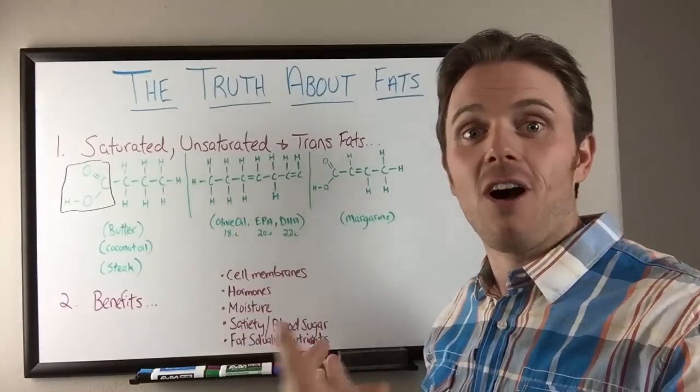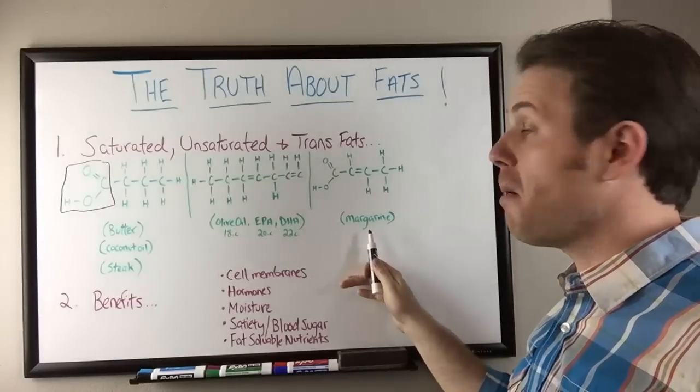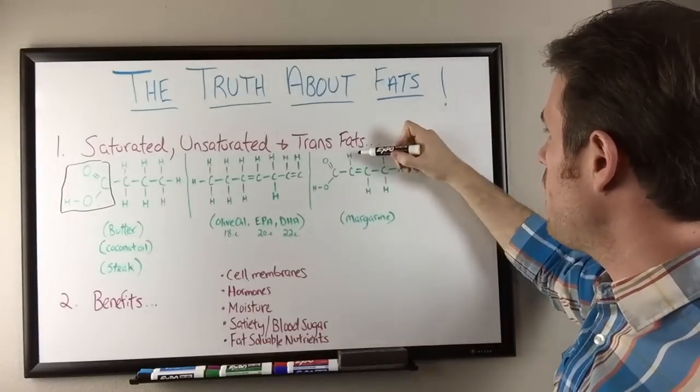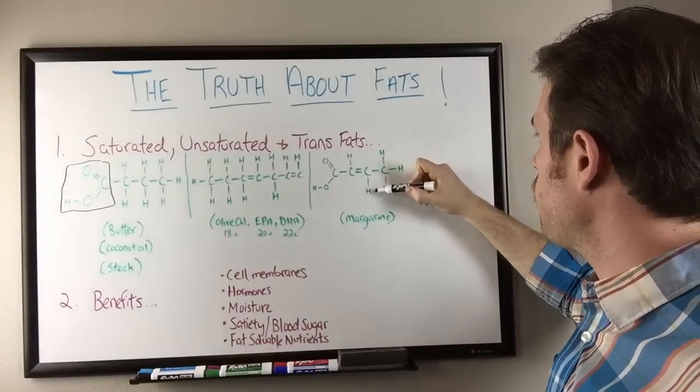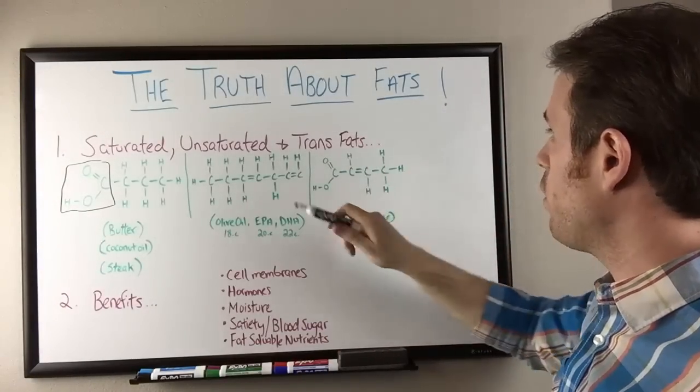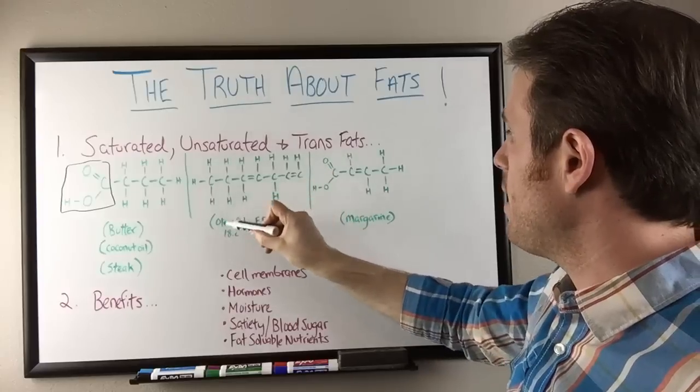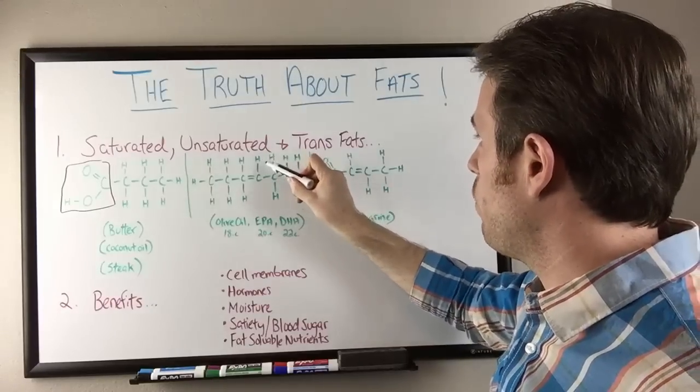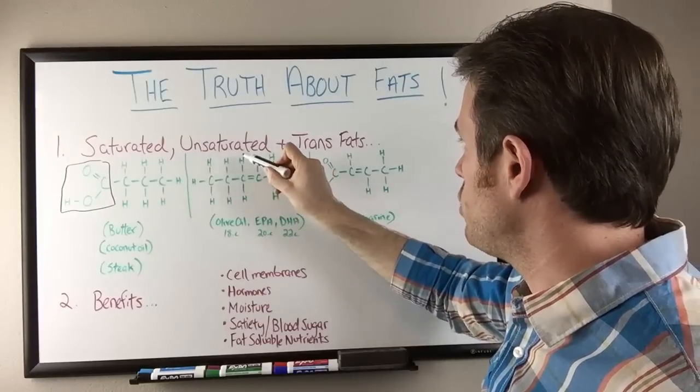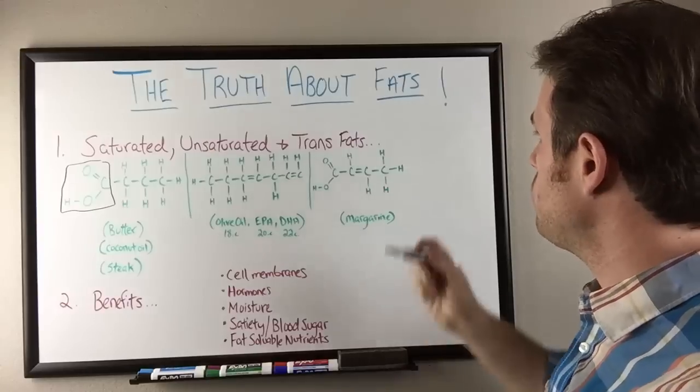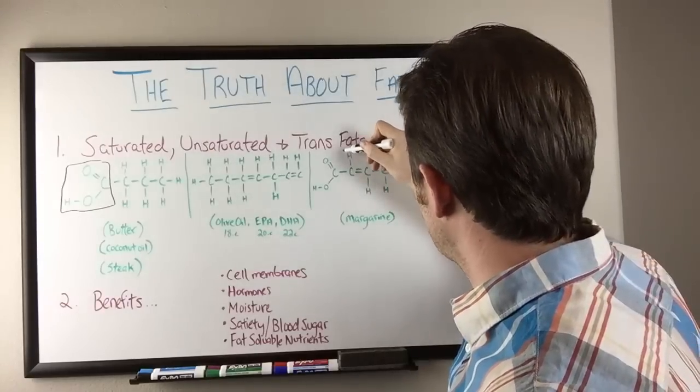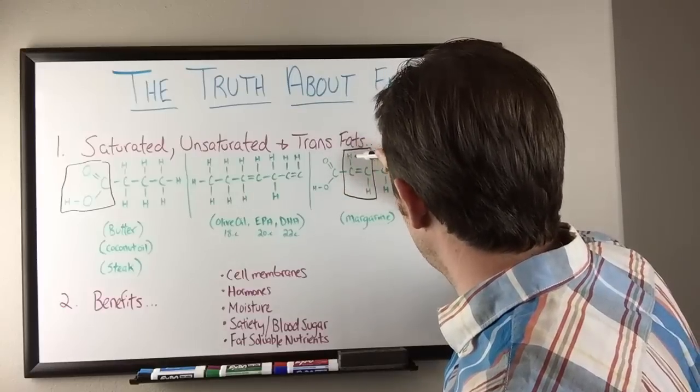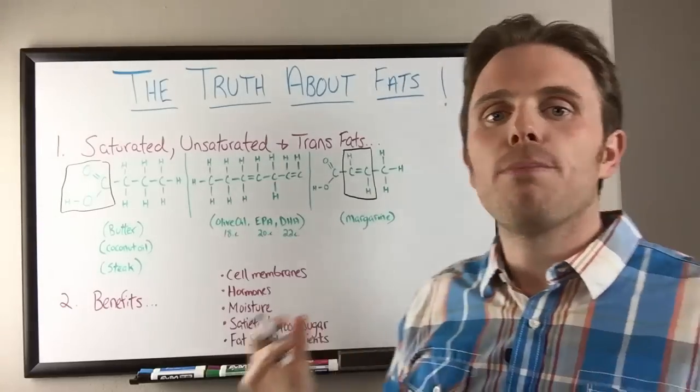So this is a trans fat. This is like the deadly, right? These are the ones that cause heart disease, otherwise known as margarine. And what makes it a trans is right here at this double bond, one hydrogen goes up while the other hydrogen goes down. So if we go over here, check this out. We could have easily made olive oil or EPA trans fat by just taking that hydrogen and erasing it and putting it down here. Then we'd have one hydrogen up and one hydrogen down. So this is what makes the trans is the fact that this part right here is flipped. Hydrogen there, hydrogen there.